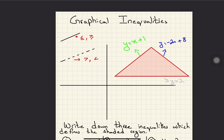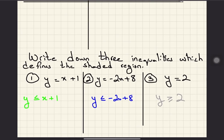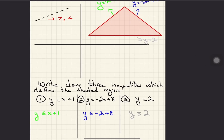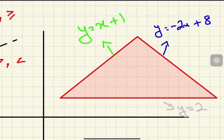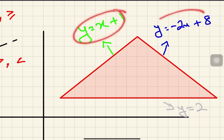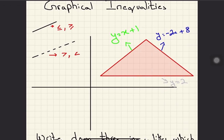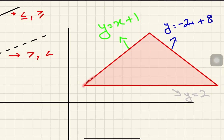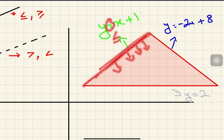Now here is an example: 'Write down three inequalities which define the shaded region.' We can see the shaded region on the graph. We need to convert three equations into inequalities. For the first line, identify whether the shaded region is above or below it. The shaded region is downward and this is a solid line, so we change the equals sign to less than or equal to.